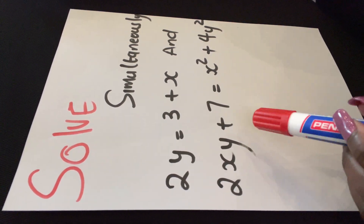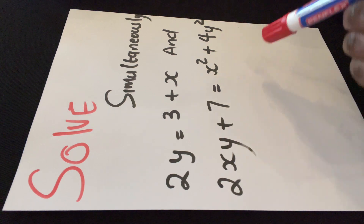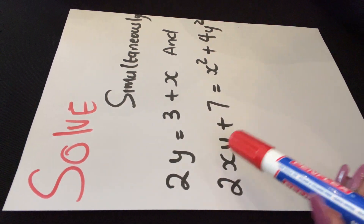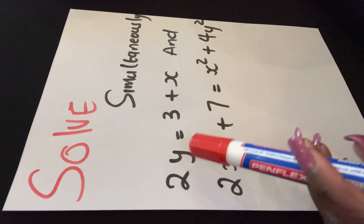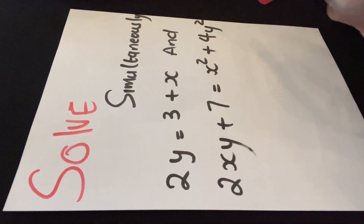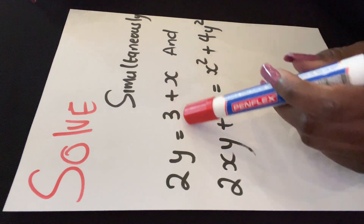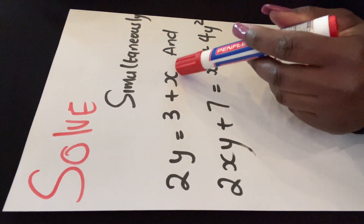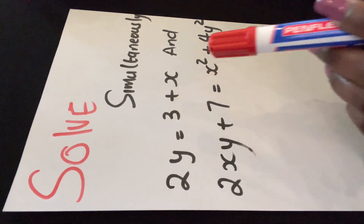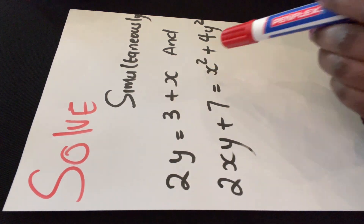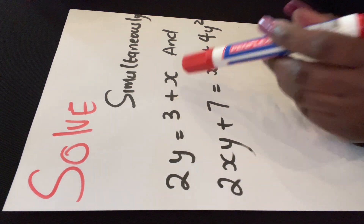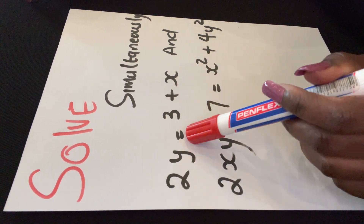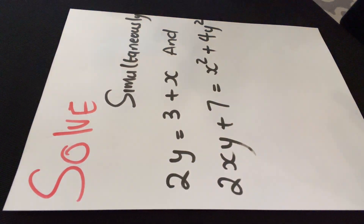Since I'm going to be using the method of substitution, the first thing is to look at my equations and see which one is easier to work with, so that I can put one of the terms as the subject of the formula. Looking at equation 1, I can see it is much easier and can be written in linear form. So I can make x the subject of the formula in the first equation, then substitute it.